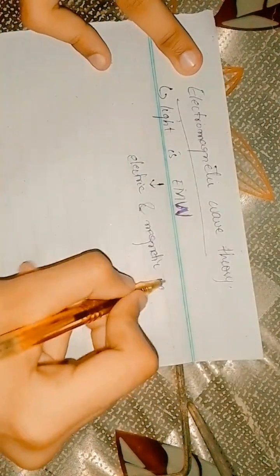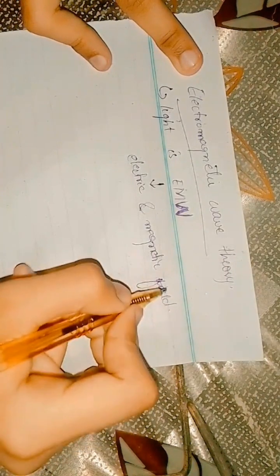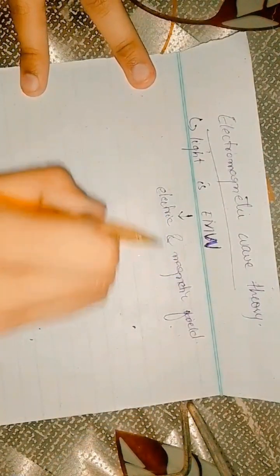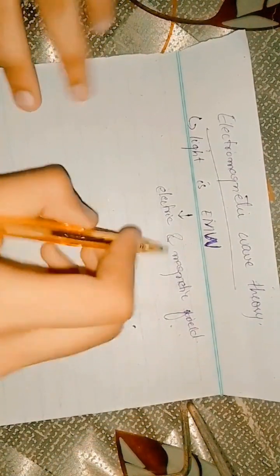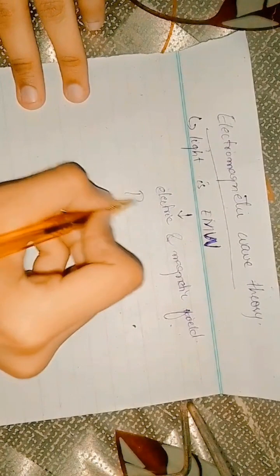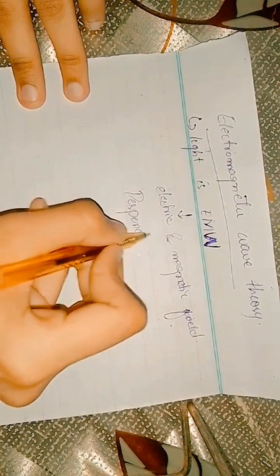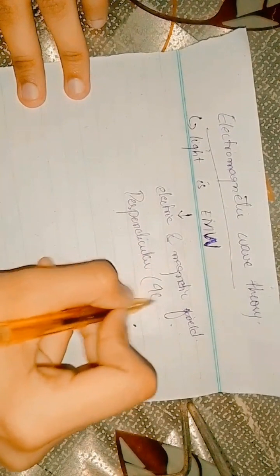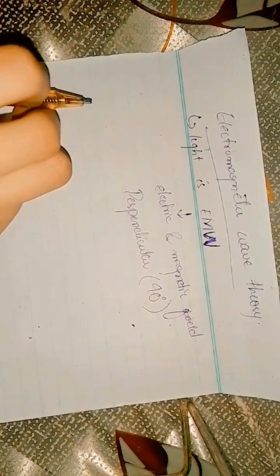So this electromagnetic wave carries electric as well as magnetic field. This electric and magnetic field is basically perpendicular to each other, having an angle of 90 degrees.